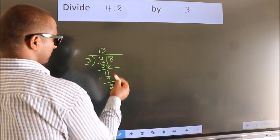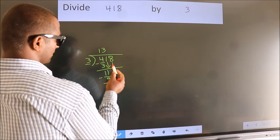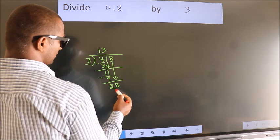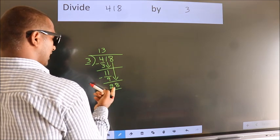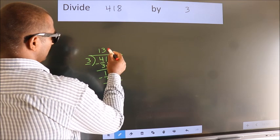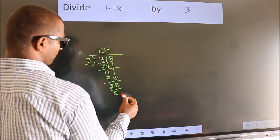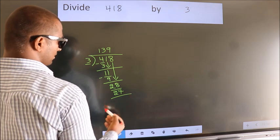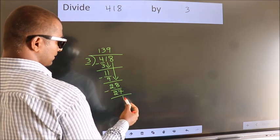After this, bring down the beside number. So, 8 down. So, 28. A number close to 28 in the 3 table is 3 nines, which is 27. Now we subtract. We get 1.